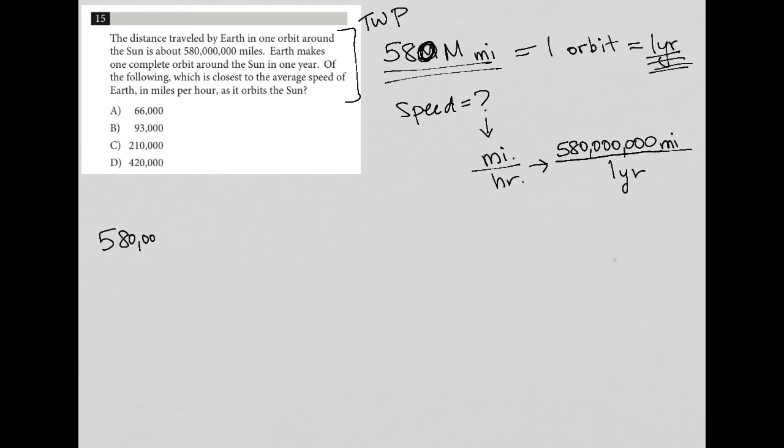You have a calculator, I'm not going to use one right now, but you could probably get this a lot faster than I'm going to get it right now. So my unit on top is good. I just need to convert that bottom unit into hours. So I'm going to say, well, in one year, there are, I don't know, let's say 365 days. And in one day, there are 24 hours.